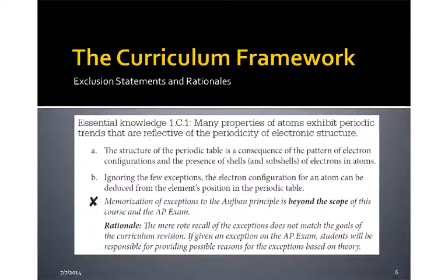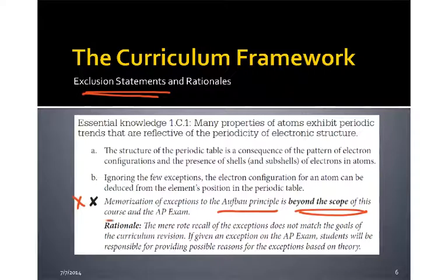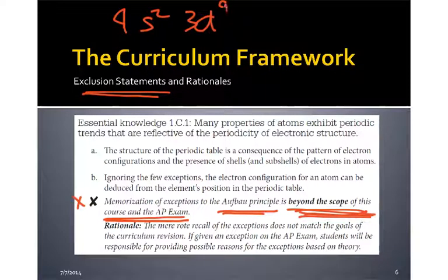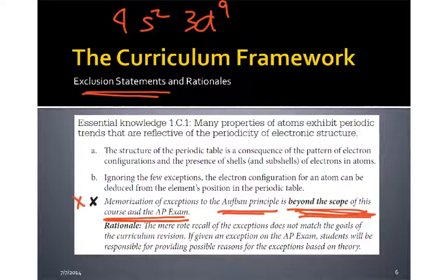As they go through the essential knowledge, there are also places where some information has been taken out of the AP curriculum, and those are called the exclusion statements. An exclusion statement has a comment like: 'memorization of the exceptions to the Aufbau principle is beyond the scope of this course and the AP exam.' They all finish with that kind of wording. So they're saying that we used to teach things like silver and copper — you would expect it to be 4S2, 3D9 for copper — but it turns out it really is 4S1, 3D10. Having students memorize those is what we used to do, but now they're saying that the mere rote recall of the exceptions does not match the goals of the curriculum revision.